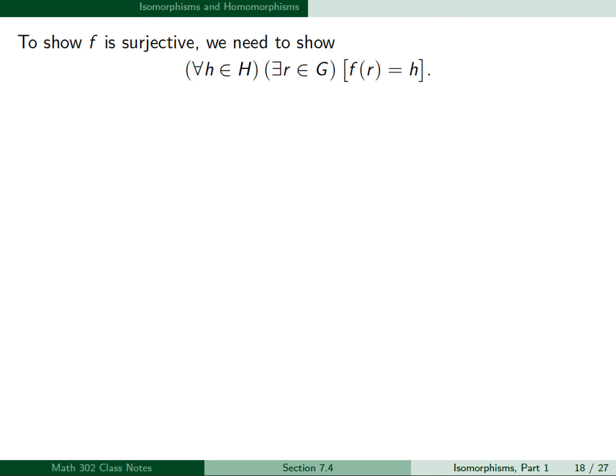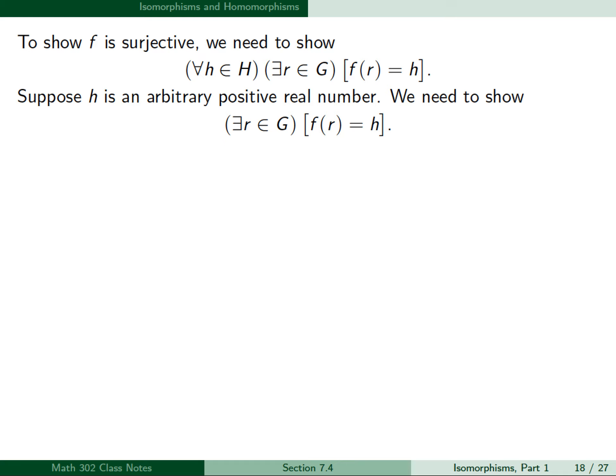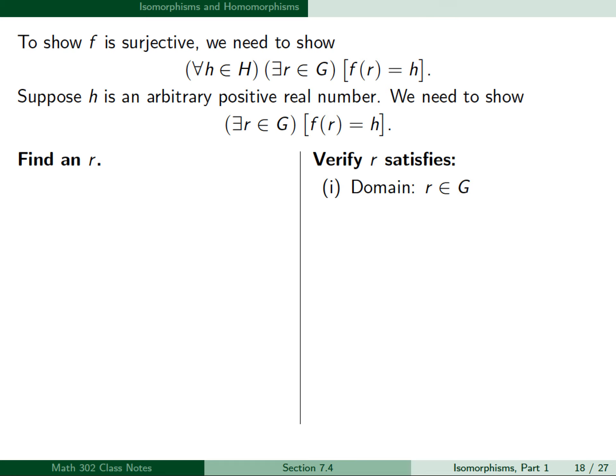To show f is surjective, we need to show that for all h in H, there exists an r in G such that f(r) = h. Suppose h is an arbitrary positive real number. We need to find an r satisfying: r belongs to G, and f(r) = 10^r = h.